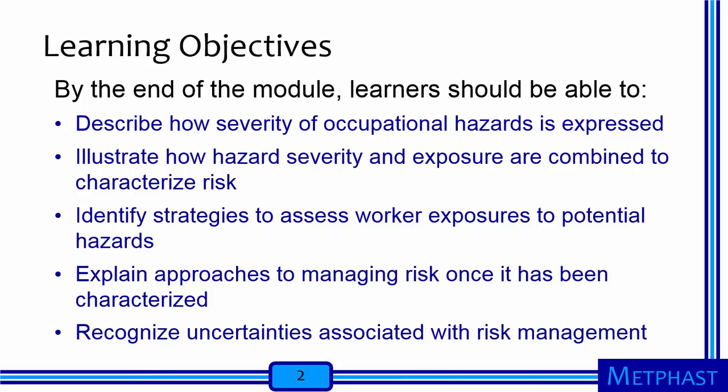By the end of this module, learners should be able to do the following: describe how the severity of occupational hazards is expressed; illustrate how hazard severity and exposure are combined to characterize risk; identify strategies to assess worker exposure to potential hazards; explain approaches to managing risk once it has been characterized; and recognize uncertainties associated with risk management.